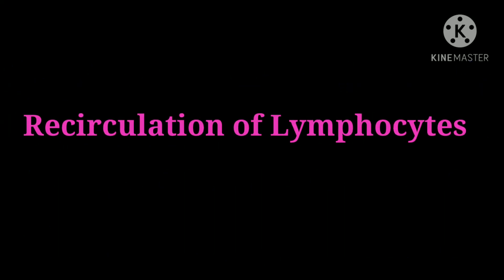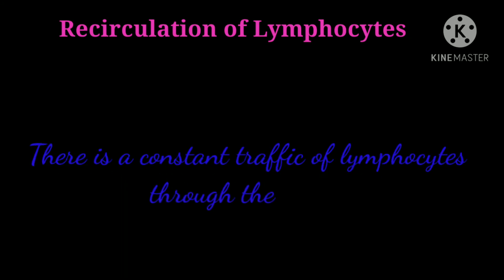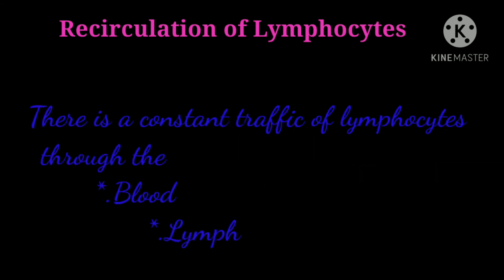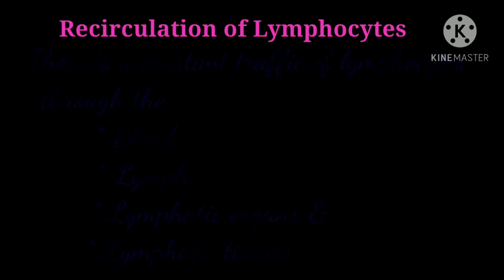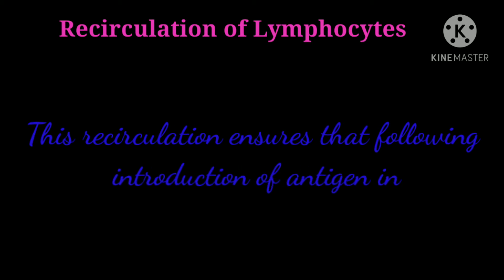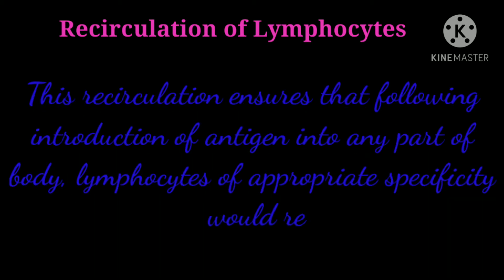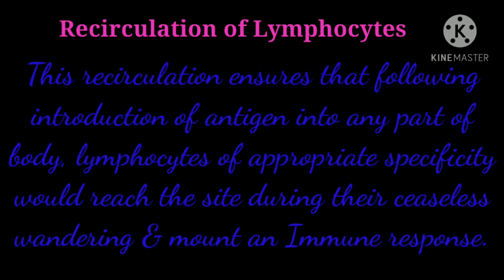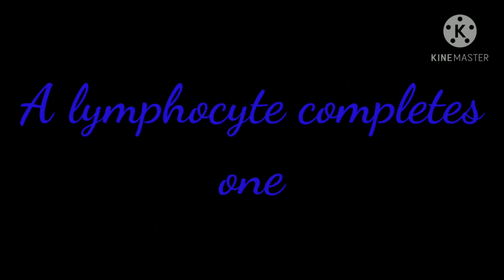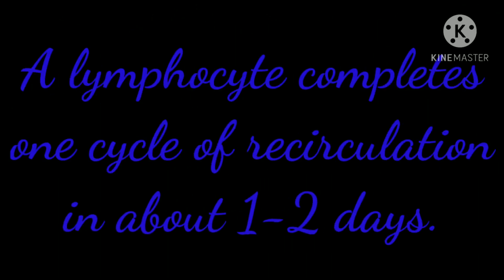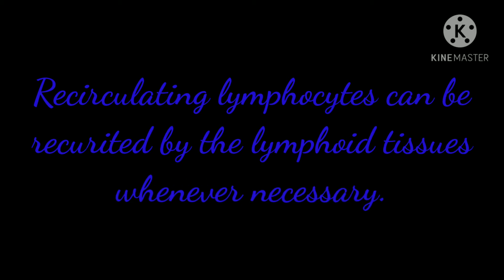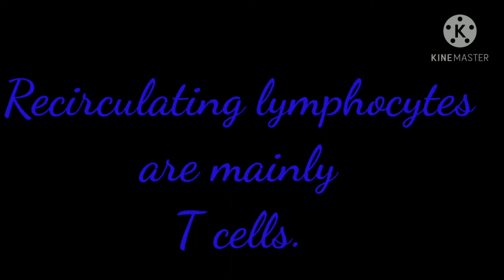Recirculation of lymphocytes. There is a constant traffic of lymphocytes through the blood, lymph, lymphatic organs and tissues. This recirculation ensures that following introduction of antigen into any part of the body, lymphocytes of appropriate specificity would reach the site during their ceaseless wandering and mount an immune response. A lymphocyte completes one cycle of recirculation in about one to two days. Recirculating lymphocytes can be recruited by the lymphoid tissues whenever necessary, and are mainly T cells.